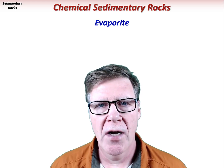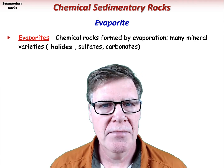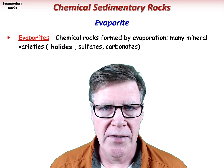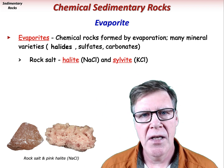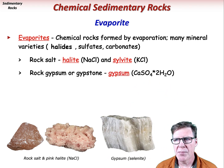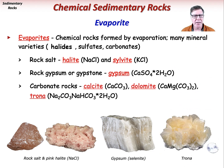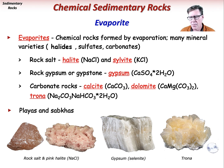Evaporites are chemical sedimentary rocks formed from the evaporation of mineral-rich waters or brines. There are many different compositional varieties, including halides, sulfates, and carbonates. Rock salt is commonly composed of the halides halite (sodium chloride) and sylvite (potassium chloride). Rock gypsum, or gypstone, is based on the sulfate mineral gypsum, which is basically hydrous calcium sulfate. Other evaporites can be formed of carbonate minerals like calcite, dolomite, or trona. These rocks typically form from surface water or groundwater in desert regions, including playas and playa lakes, or coastal tidal mudflats called sabkhas, where evaporation rates are very high and brines are typically present.